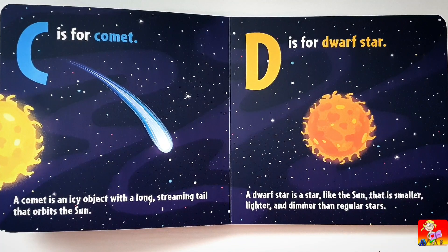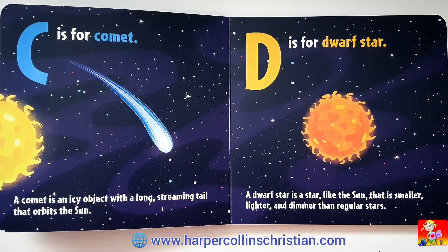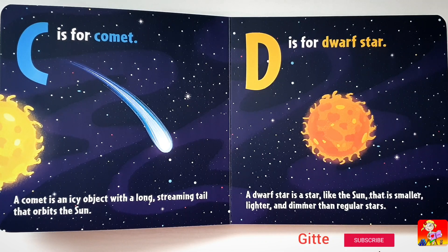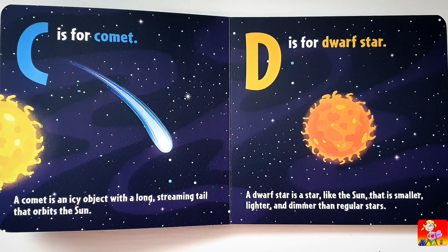C is for Comet. A comet is an icy object with a long streaming tail that orbits the sun. D is for Dwarf Star. A dwarf star is a star like the sun that is smaller, lighter and dimmer than regular stars.